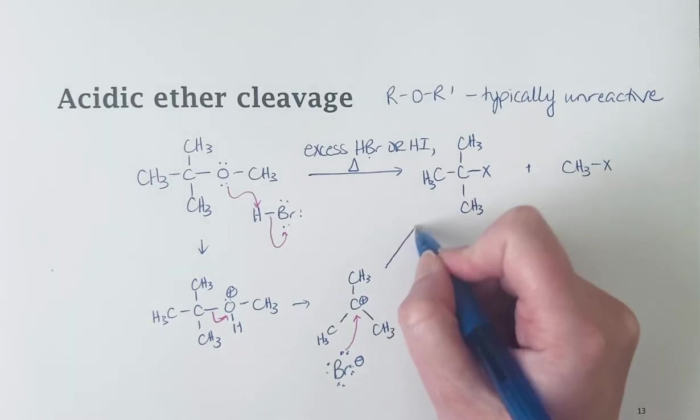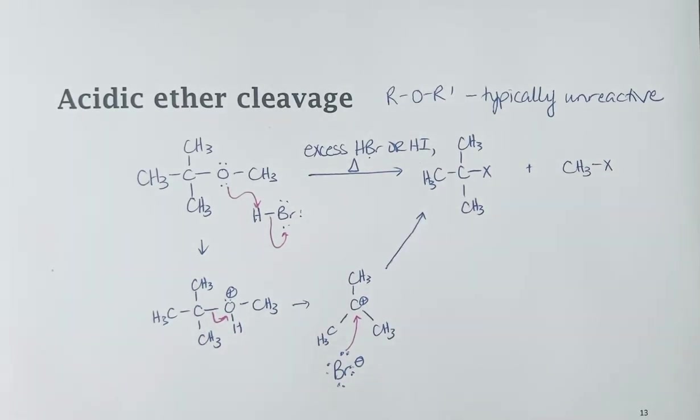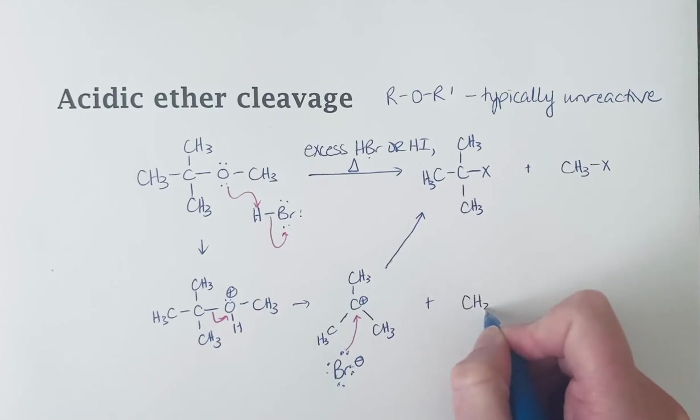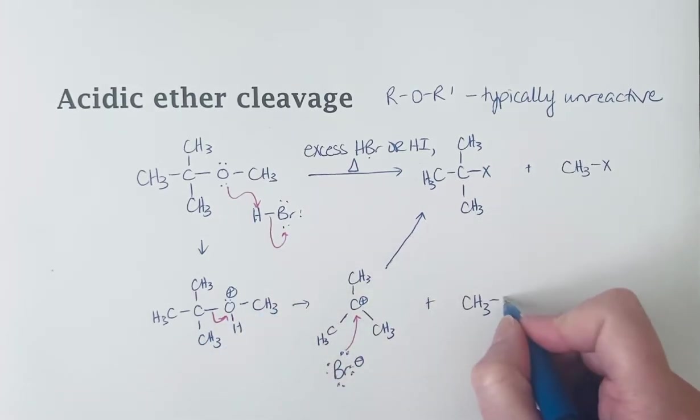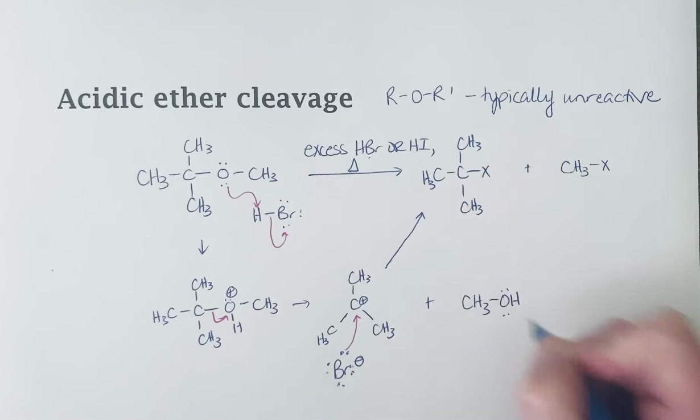And that would give us this tertiary alkyl halide here. And we've also formed in the reaction, right here, we've lost a molecule of methanol. And so that molecule of methanol, we've got excess of acid.